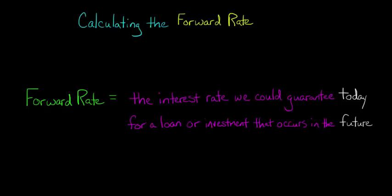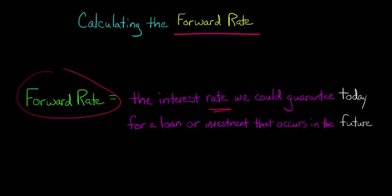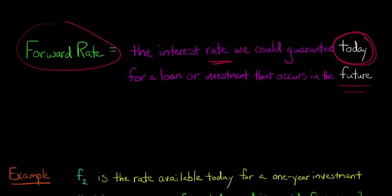In this video, we're going to talk about how you can calculate the forward rate based on yields from zero coupon bonds. When we say the forward rate, what we're talking about is the interest rate that we could guarantee today, right now, for a loan or investment that's going to occur at some point in the future — could be two years from now, three years from now — but we're going to lock in this rate today.